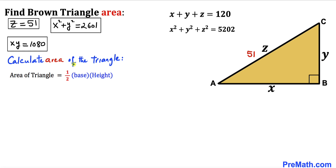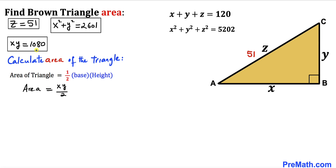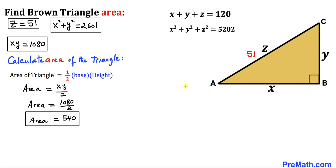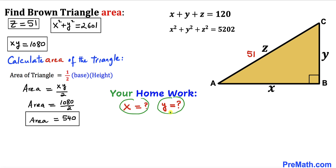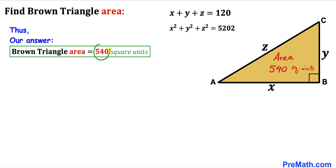For our final step, the area of triangle ABC equals one half times base times height, which is X times Y divided by 2. Since X times Y equals 1080, the area equals 1080 divided by 2, which is 540 square units. Notably, we found the area without finding individual values of X and Y. As an assignment, can you figure out X and Y on your own? Thanks for watching and please don't forget to subscribe!